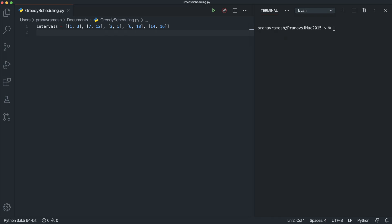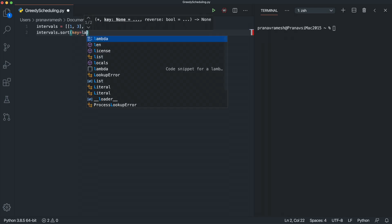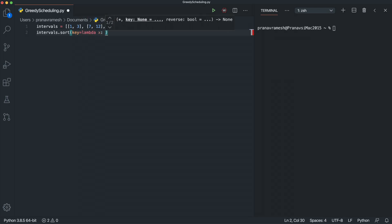So the first step of our algorithm is to actually sort this. And so we want to do a keyed sort. So intervals.sort. And we want to apply a key. So key = lambda x. And so this allows us to prioritize how we want to sort. So we want to sort based on second element and then first element. So we'll do x[1], and then x[0].